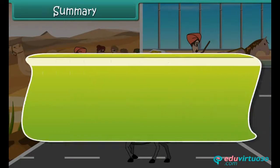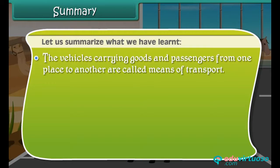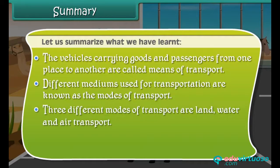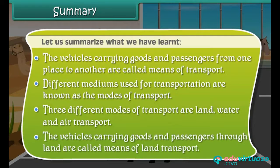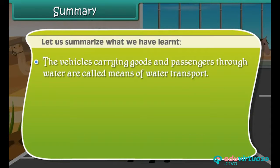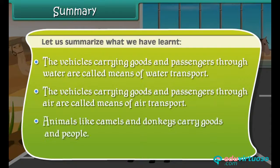Summary. Let us summarize what we have learned. The vehicles carrying goods and passengers from one place to another are called means of transport. Different mediums used for transportation are known as the modes of transport. Three different modes of transport are land, water, and air transport. The vehicles carrying goods and passengers through land are called means of land transport. The vehicles carrying goods and passengers through water are called means of water transport. The vehicles carrying goods and passengers through air are called means of air transport. Animals like camels and donkeys also carry goods and people.